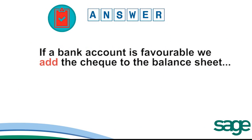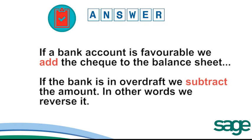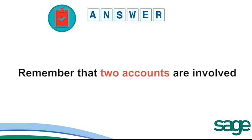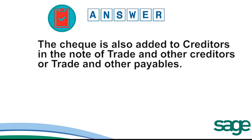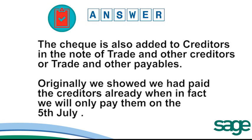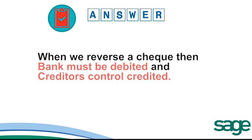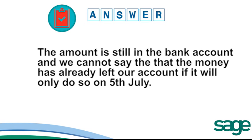So how would it be treated? If the bank account is favourable, we add the check to the balance sheet. But if the bank account is in overdraft, we subtract the amount — in other words, we reverse it. Remember that two accounts are involved in a double entry. The check is also added to creditors in the note of trade and other creditors or trade and other payables. Originally, we showed that we had paid the creditors already, when in fact we will only pay them on the 5th of July. Therefore, we need to reverse it in creditors as well.